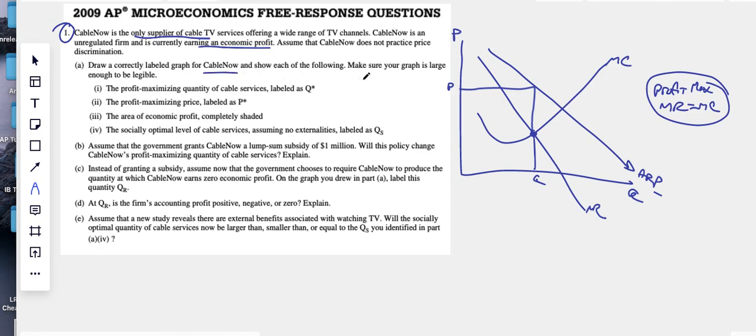Draw a quick label graph for cable now. Make sure the graph is large. Profit maximizing Q star, so we want to put in our star. Maximizing price P star. Easy enough. Area profit.